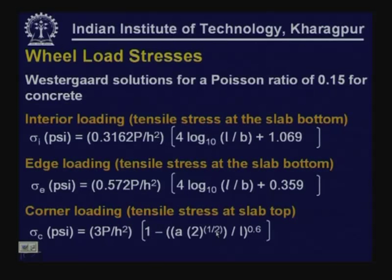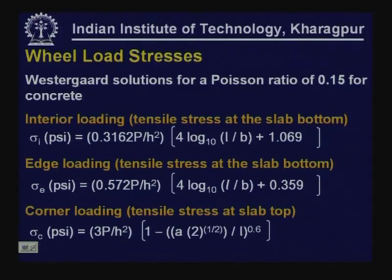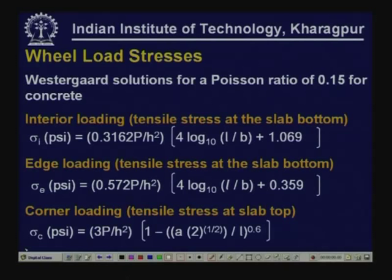These are the expressions given by Westergaard for a Poisson ratio value of 0.15 assumed for concrete, for load being placed in different regions: interior loading, edge loading, and corner loading. For the interior loading case, there will be tensile stresses at the slab bottom and compressive stress at the top. Sigma interior in terms of PSI — these equations are in the FPS system — is given as a function of single wheel load P, thickness of slab H, L the radius of relative stiffness, and a parameter B.